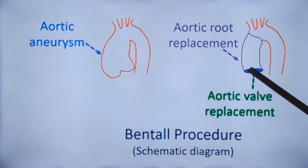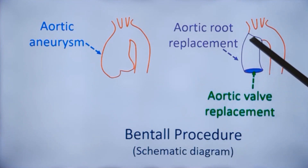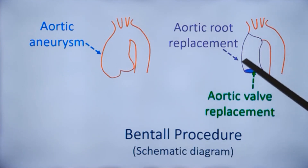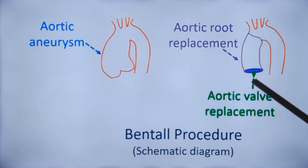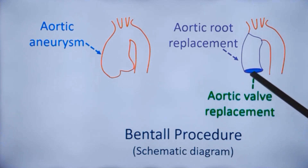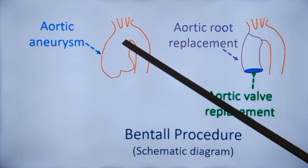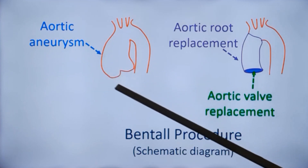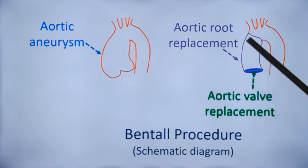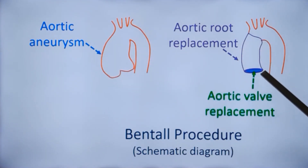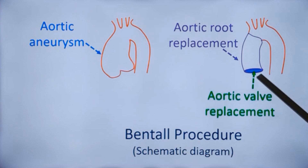A composite graft having an ascending aortic portion as well as an artificial aortic valve is used to replace the diseased segment. This region is resected out and is replaced by the composite graft.